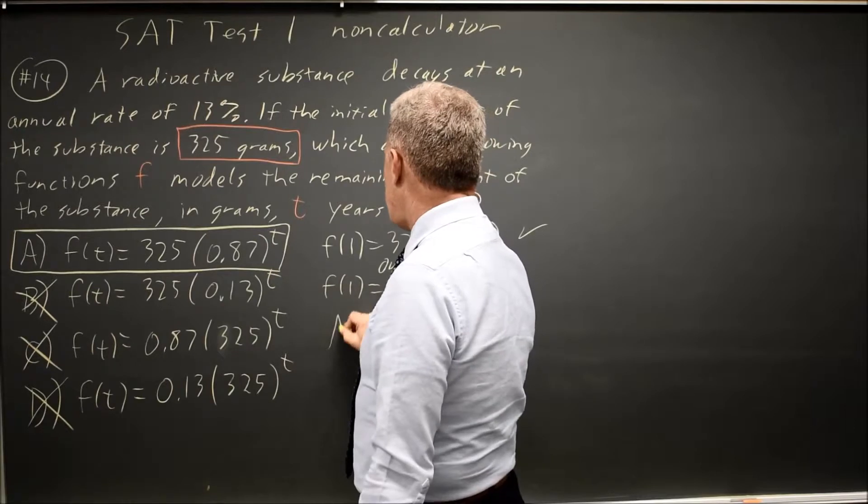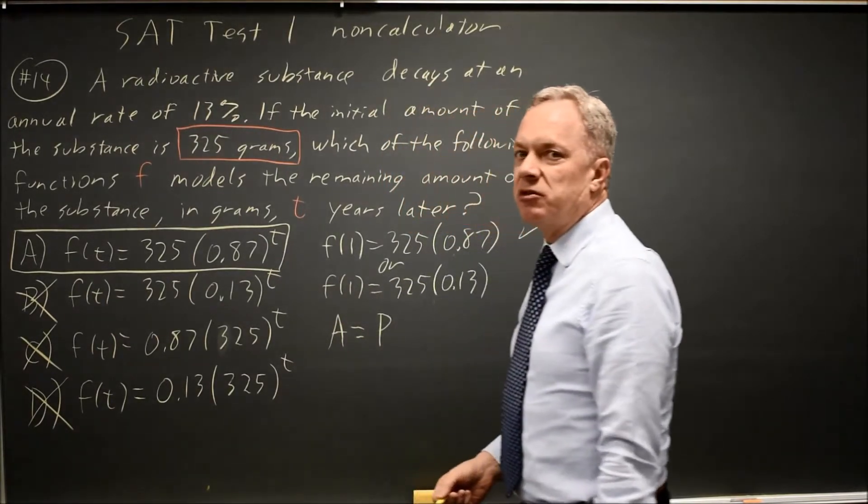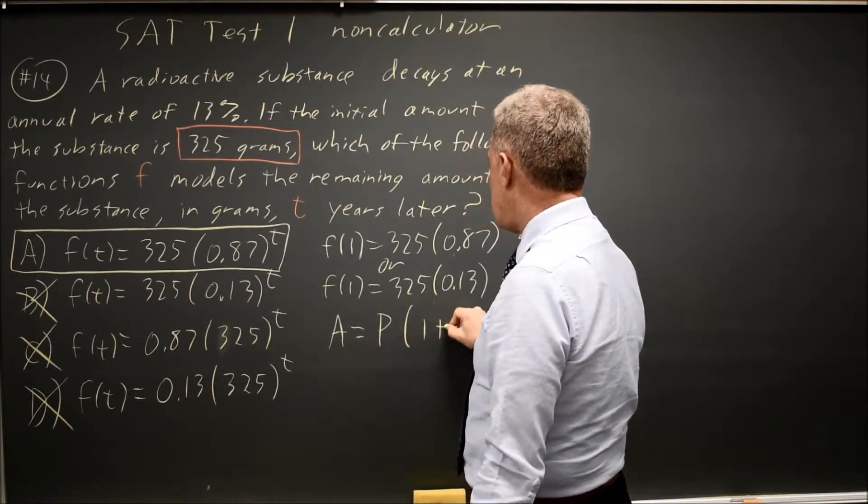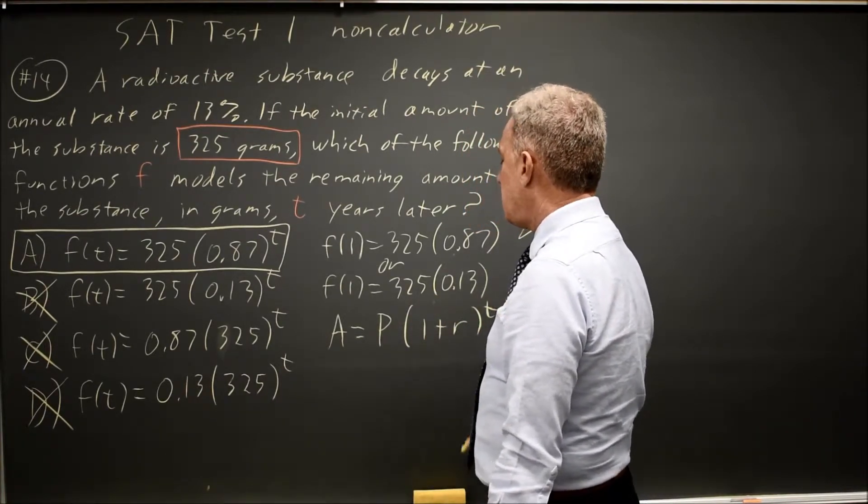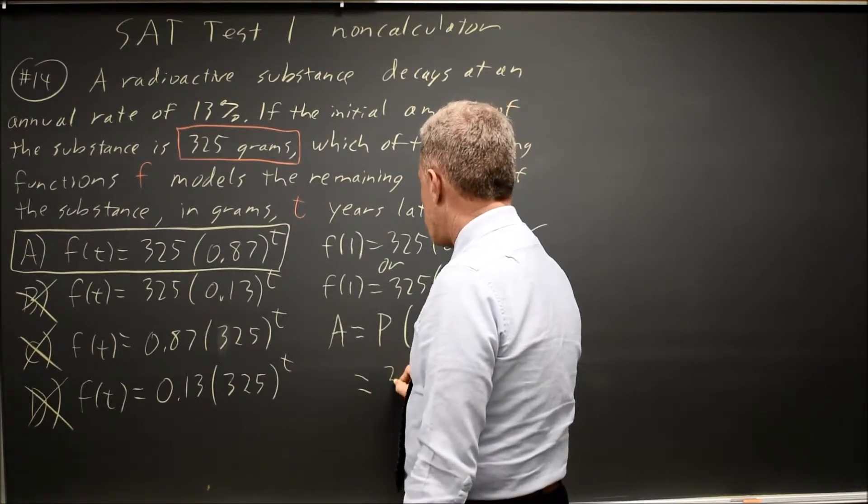Alternatively, the amount you have is your beginning amount, which I'm going to write as P, like we do in finance for principle, times 1 plus R to the t. And our amount at the beginning, P, is 325.